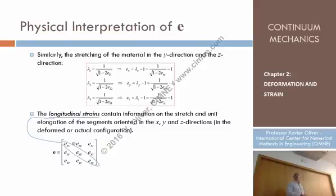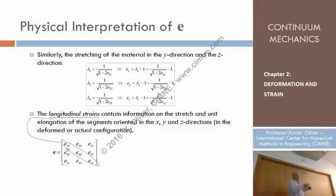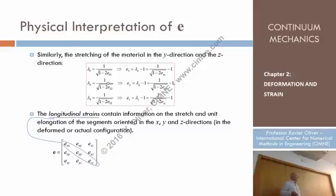If those diagonal components are zero, that means the segments have kept the same length, although they may have rotated. But if they are positive, it means the segment has increased in length.